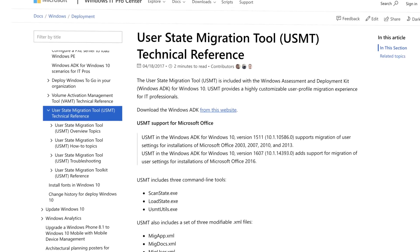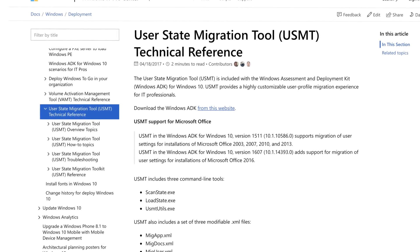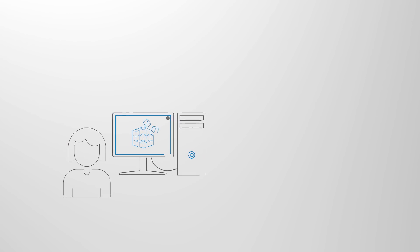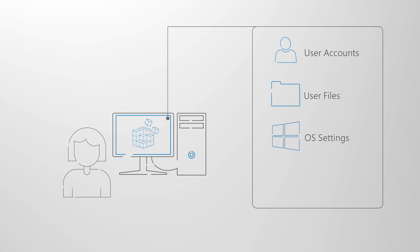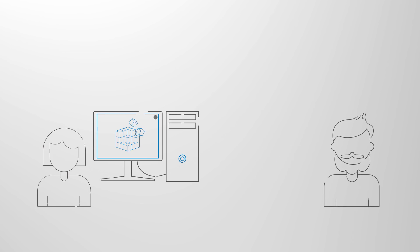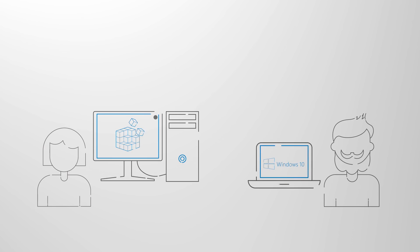First, let's look at your automation options. Task sequence-based deployment automation tools like Config Manager and MDT leverage the User State Migration Tool, or USMT, as part of an end-to-end deployment process. USMT captures user accounts, user files, operating system settings, and application settings, then migrates them to the new Windows installation. You can use the tool for both PC replacement and PC refresh migrations.